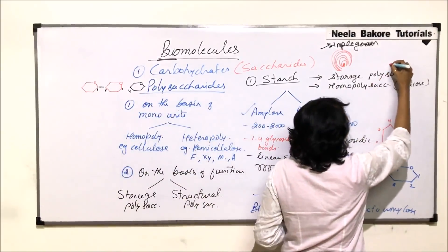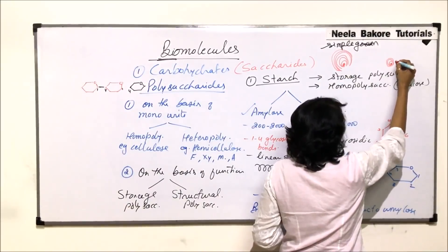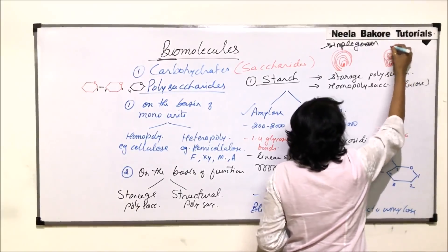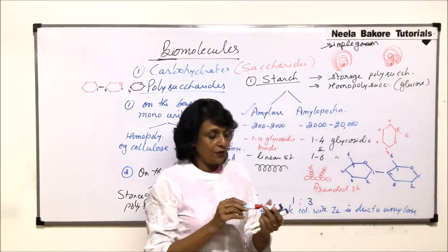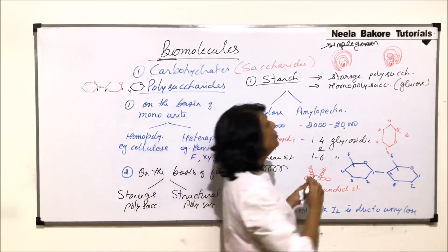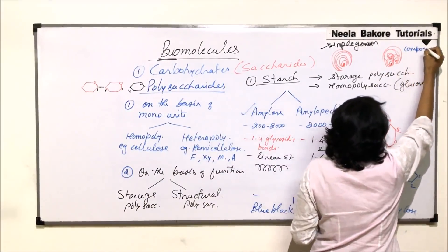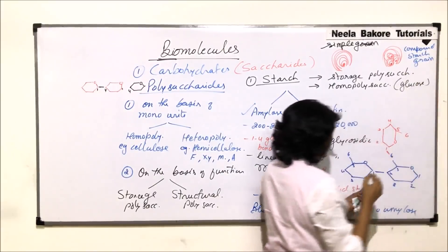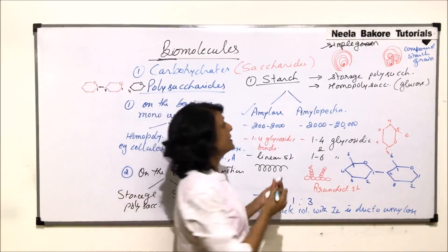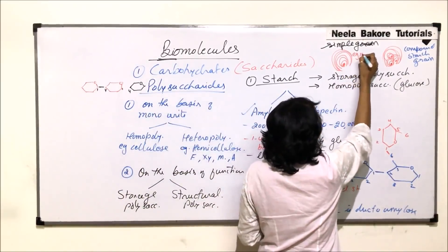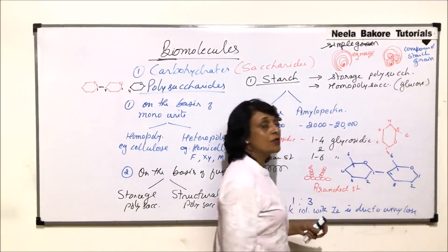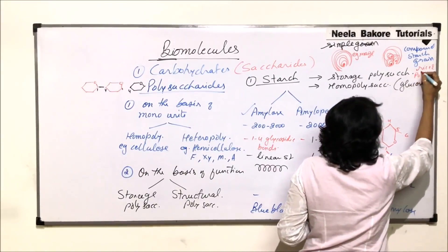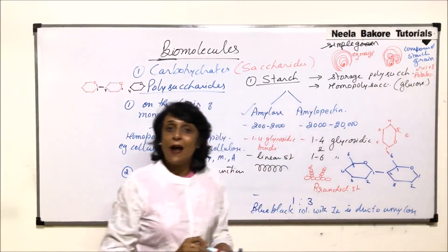If there is more than one hilum — each with a few layers of starch — and then a common sheath surrounding them, then such starch grains are termed compound starch grains. Simple starch grains are found in maize, while compound starch grains are found in rice and potato.